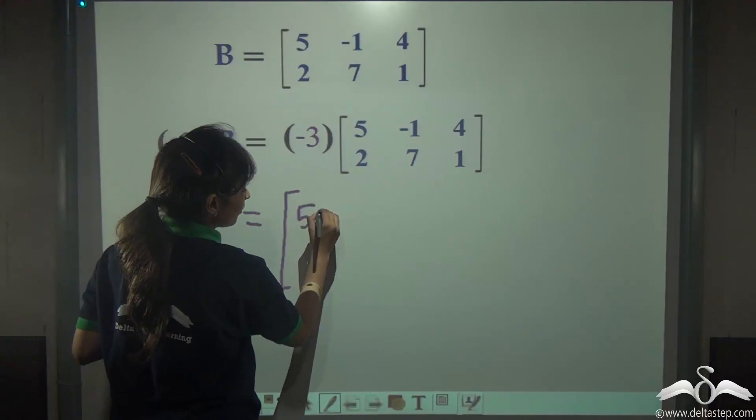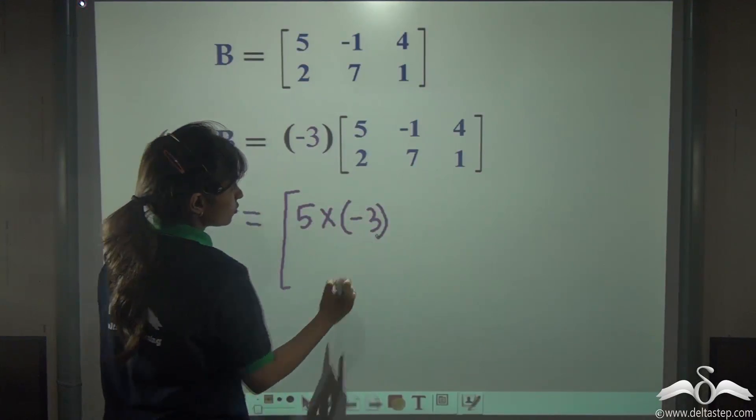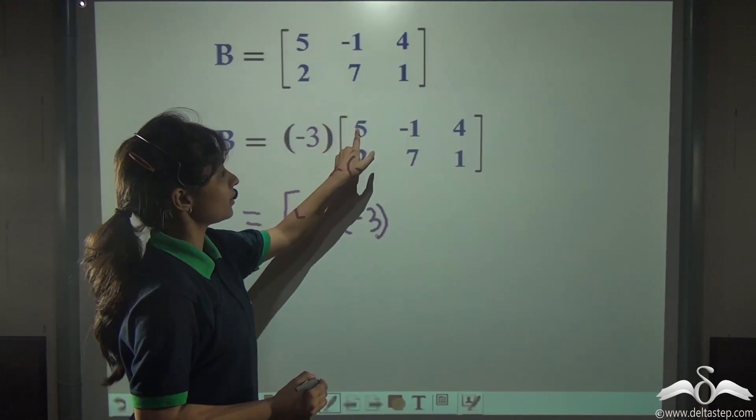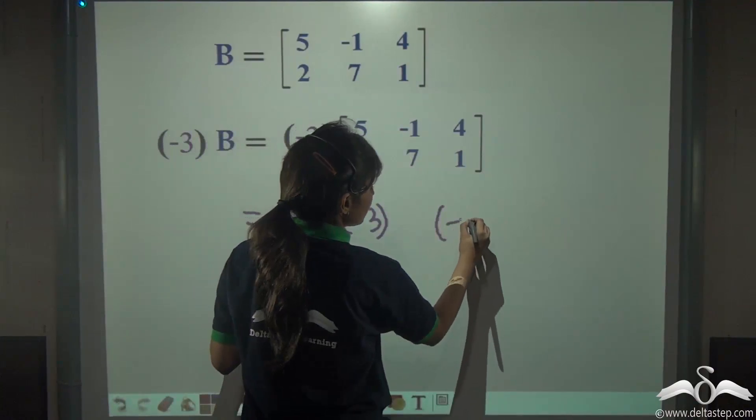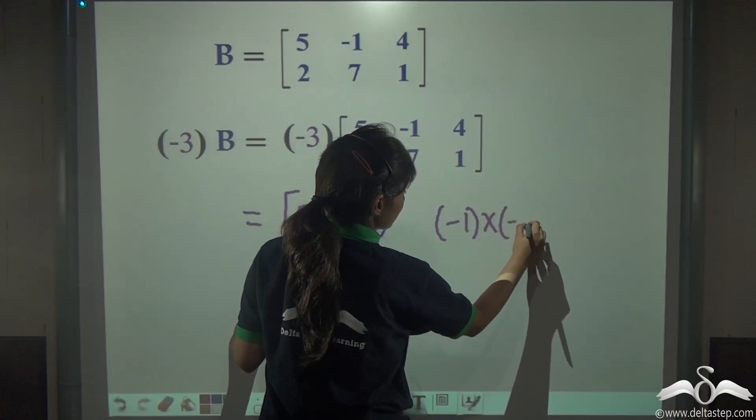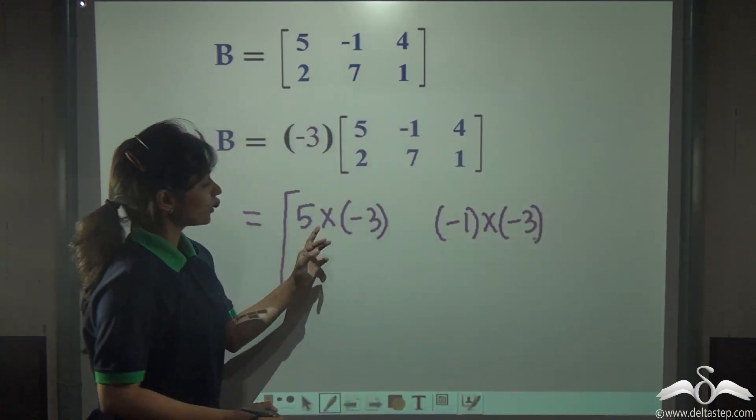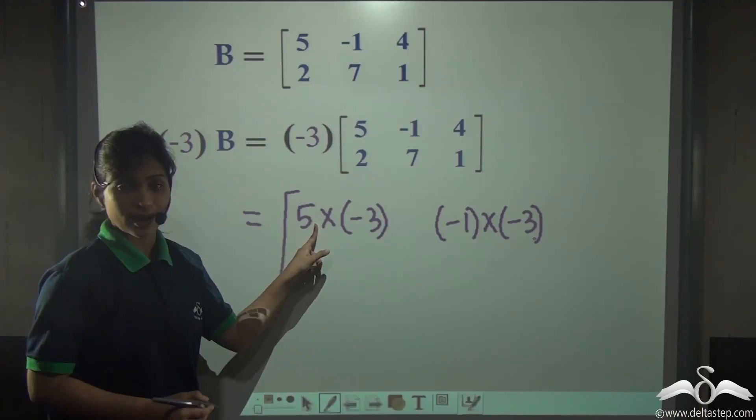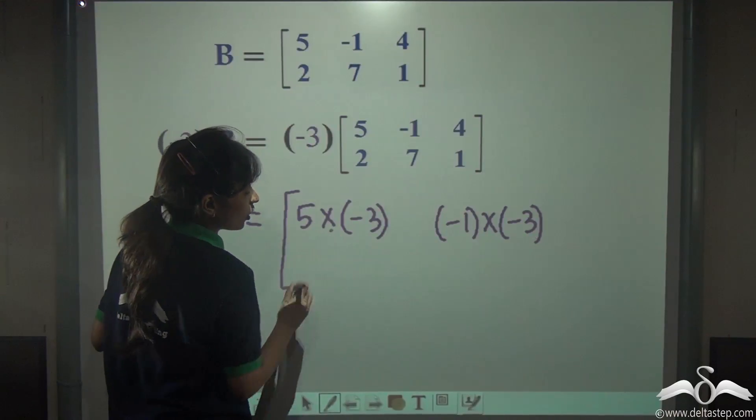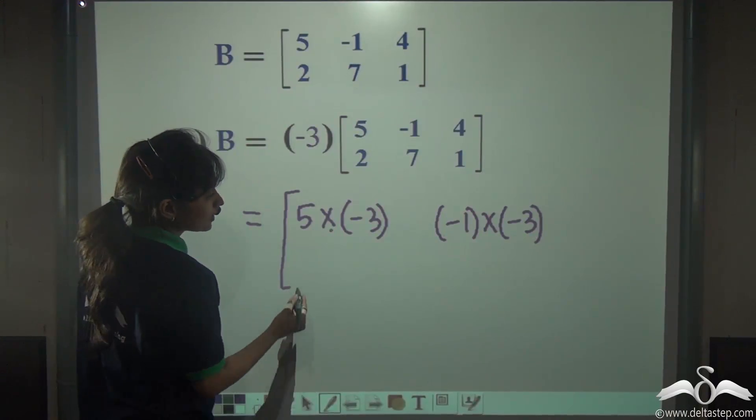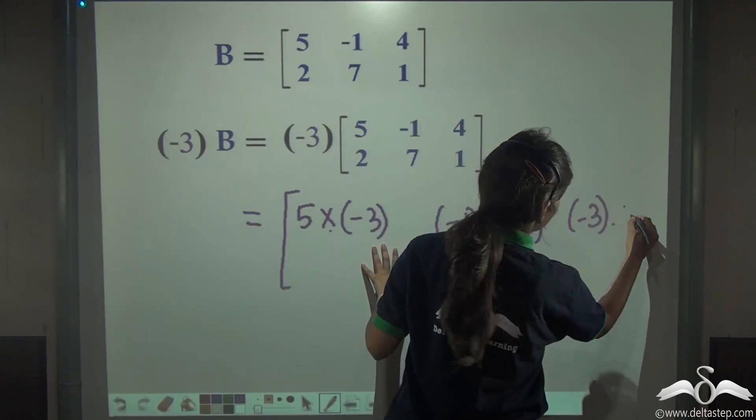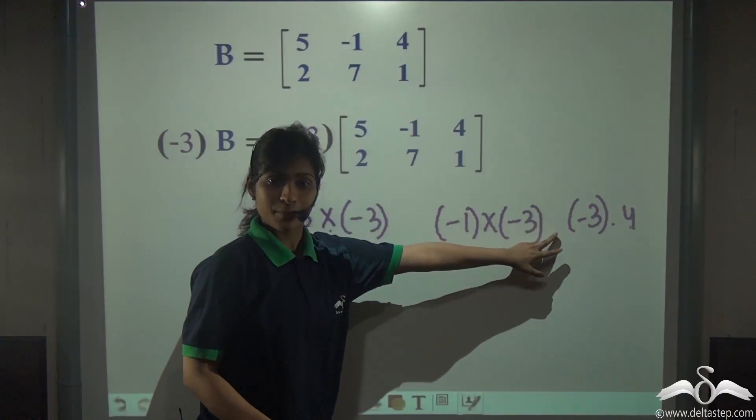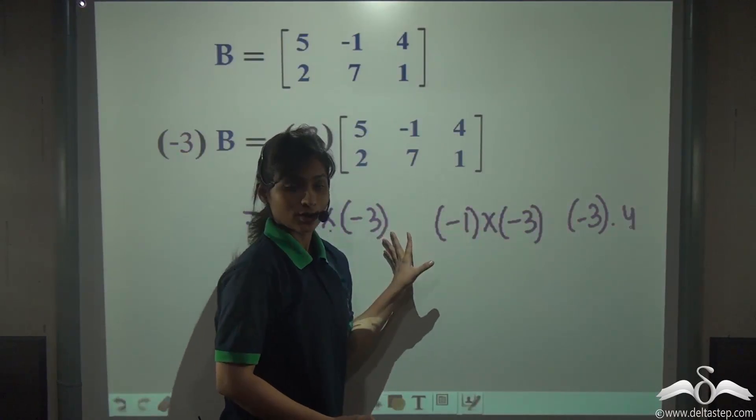So 5 into minus 3, then minus 1 into minus 3. Well, to avoid the confusion of this multiplication sign, you can also use the dot sign as well. This will reduce the space also for writing your sums.